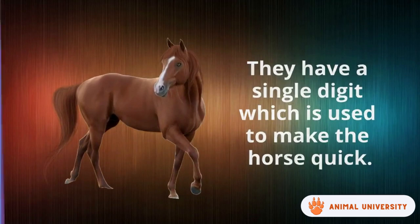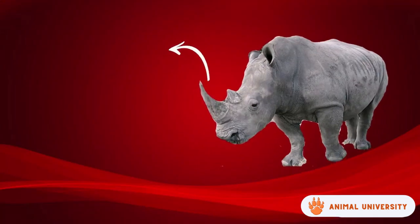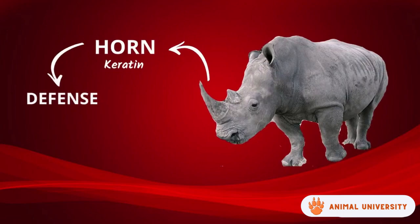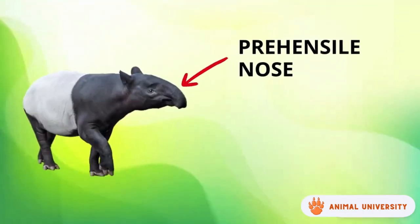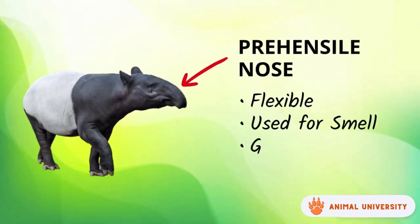They have a single digit which is used to make the horse quick. Rhinoceros have a horn which is made out of keratin and is used for defense. However, rhinoceros are being poached for these horns. Tapirs have a trunk-like nose which is flexible and is used for smell and grabbing objects, kind of like an elephant trunk.